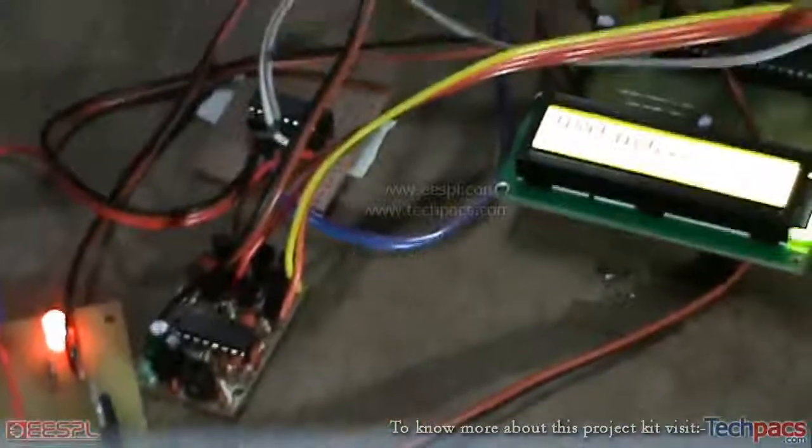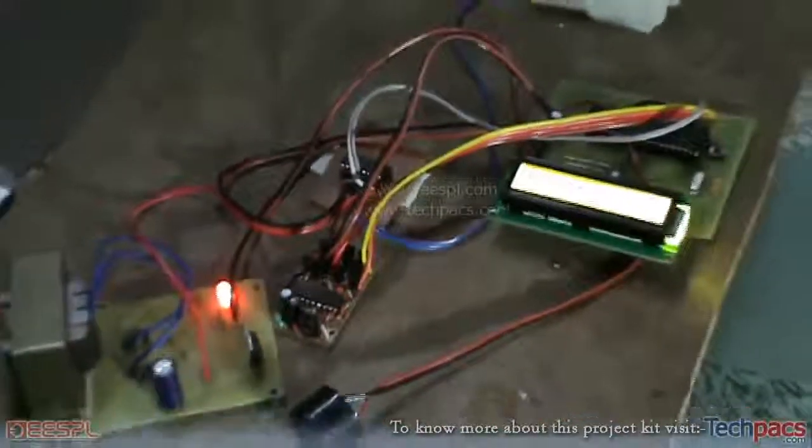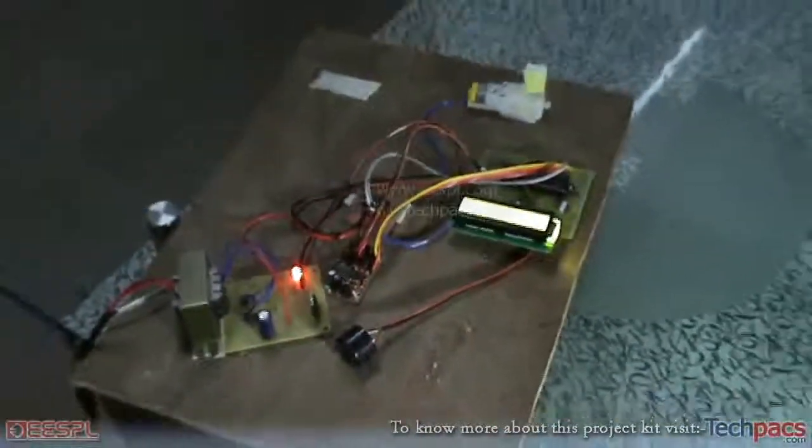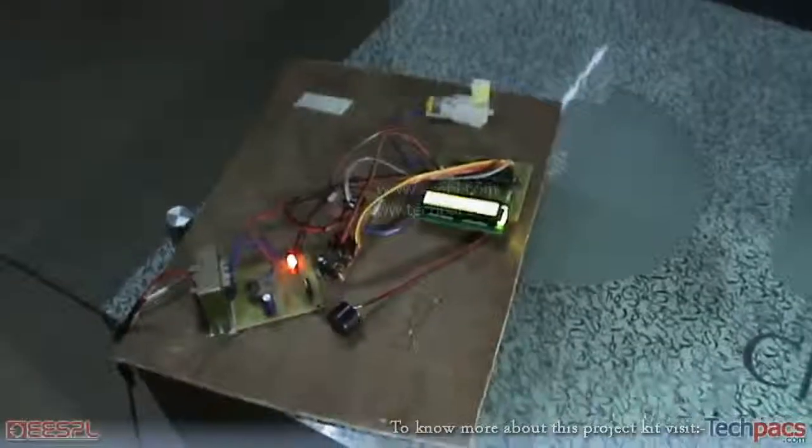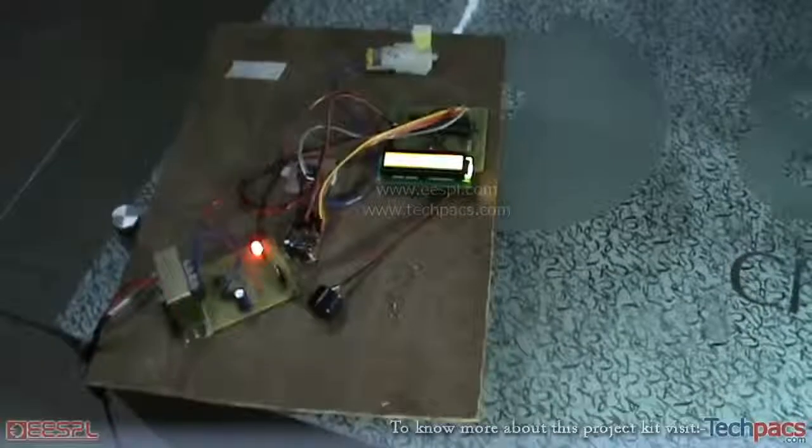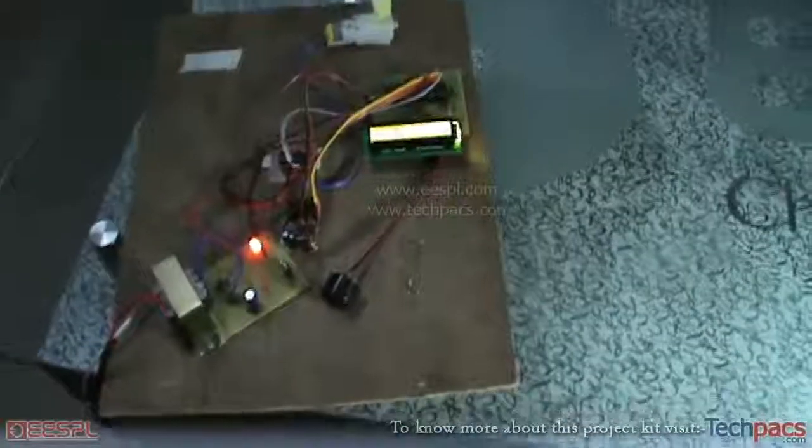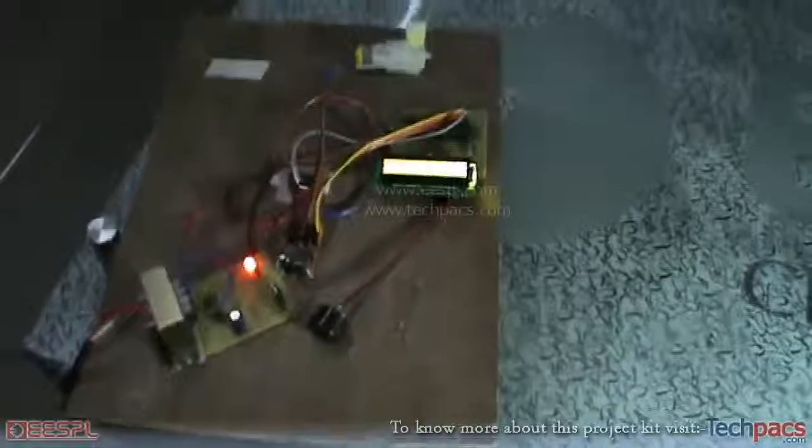So what this project does is it has an RF receiver with a particular unique ID of the transmitter. The transmitters are fitted into the various cars, and when the car comes near the barrier it will detect its ID and check if there is sufficient balance in the memory or in the card and will open the gate accordingly or the barrier accordingly.